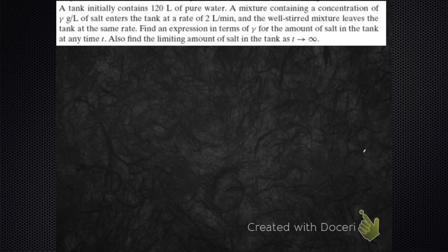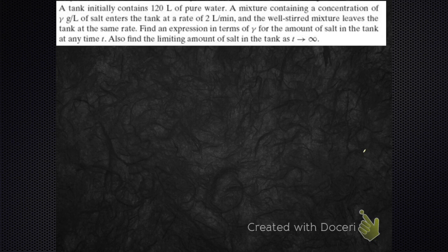A tank initially contains 120 liters of pure water. A mixture containing a concentration of gamma gallons per liter of salt enters the tank at a rate of 2 liters per minute, and the well-stirred mixture leaves the tank at the same rate. Find the expression in terms of gamma for the amount of salt in the tank at any time t, and think about what's going to happen to the salt in that tank over time.